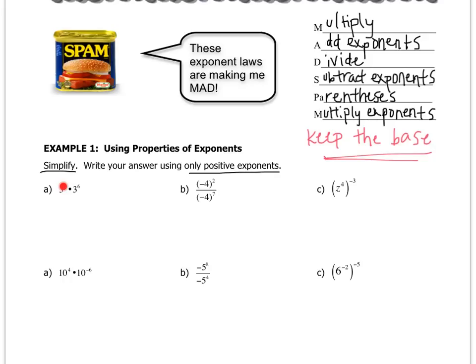You can see that this is going to be an example where I have to add the exponents because I have multiplication, and the rule is that when you're multiplying, you add the exponents and keep the base. So I will keep the base as 3. And 2 plus 6 equals 8. The exponent here would be 8. That's all they want us to do. They don't want us to evaluate, so we're just going to leave it like that.